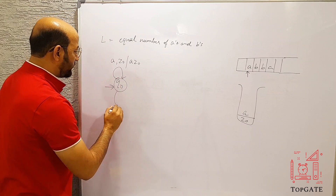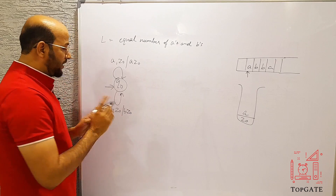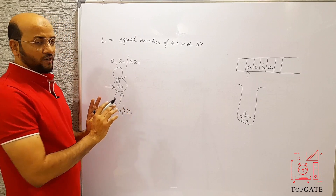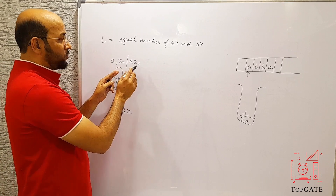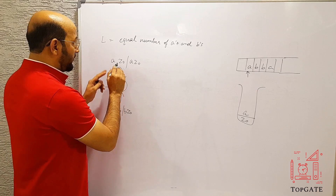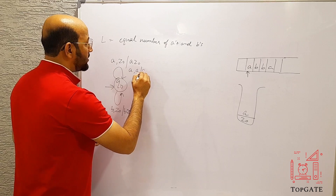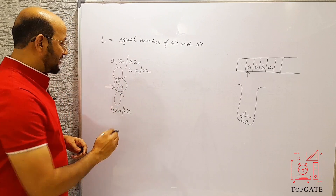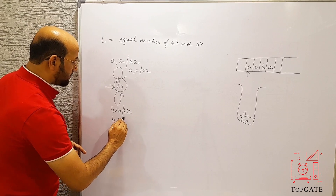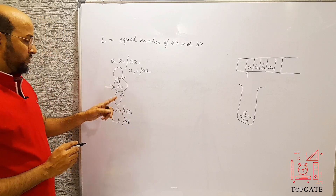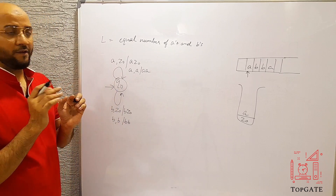Similarly, if the string starts with B, we have transition B, Z0 / B Z0 — we push B into the stack. If another A comes after the first A, we write transition A, A / A A. Similarly if another B comes after B, we write B, B / B B. This handles all consecutive A's and B's that come first.